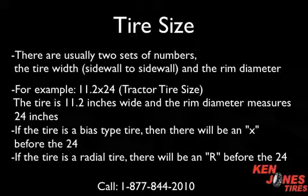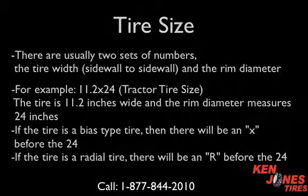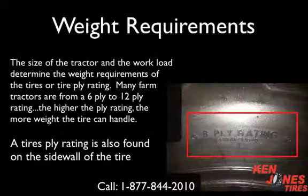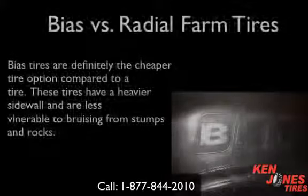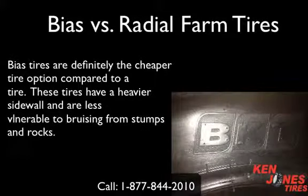If the tire is a bias type, there will be an X before the number 24. If the tire is a radial tire, there will be an R before the 24. The size of the tractor and the workload determine the weight requirements of the tires, or the tire's ply rating. Many farm tires range from a 6-ply to a 12-ply rating — the higher the ply rating, the more weight the tire can handle. A tire's ply rating is also found on the sidewall of the tire.